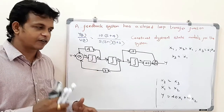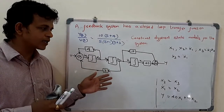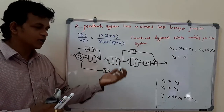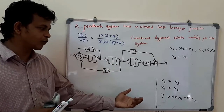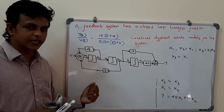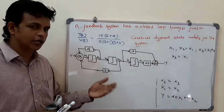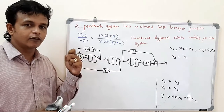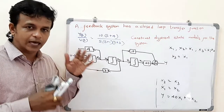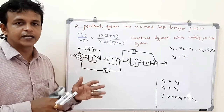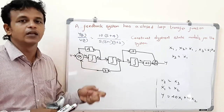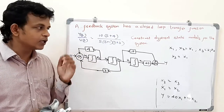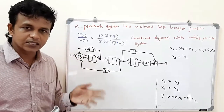The canonical model uses a different kind of approach. In all other approaches we derived the state model first and then drew the state diagram, whereas in the canonical model we start from the state diagram to decide the state variables, and after assigning the state variables we determine the state model. That will be discussed in the next video.